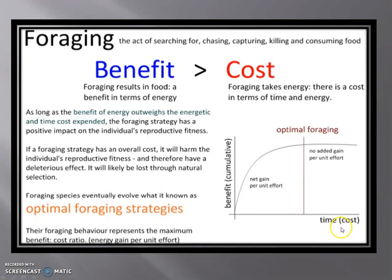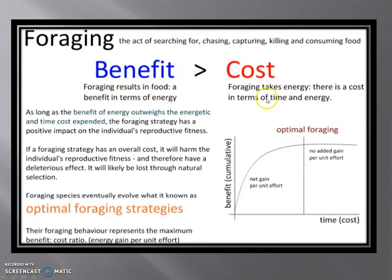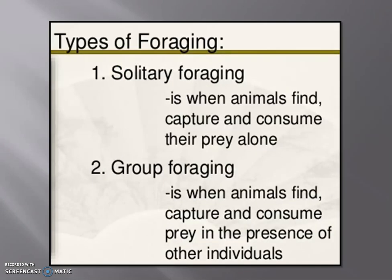Through this graph you can see the relationship: the x-axis represents time or cost, and the y-axis represents benefit and net gain per unit effort. The optimal range represents the optimum foraging value. Natural selection will select any organism that has greater fitness — meaning the benefit, the amount of energy gained from foraging, must always be more than the cost in terms of time and energy.